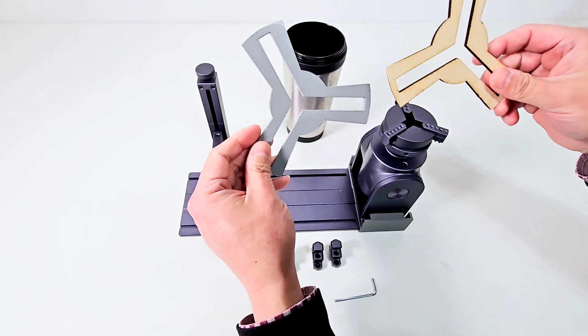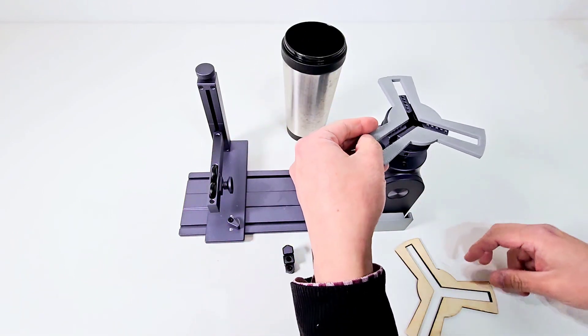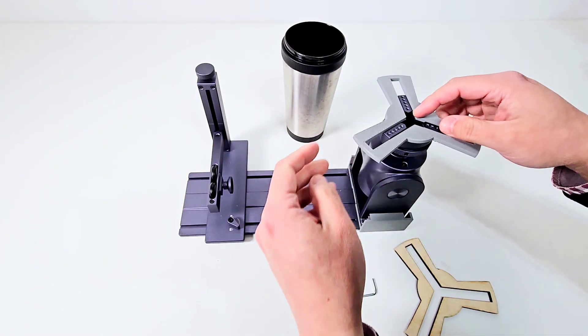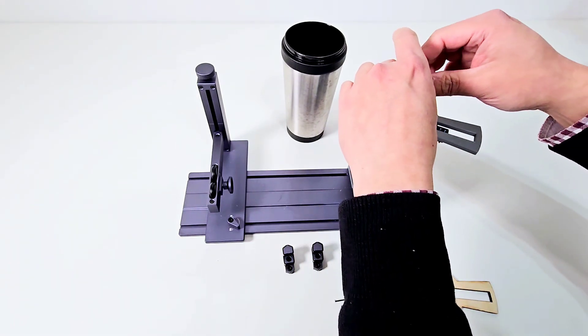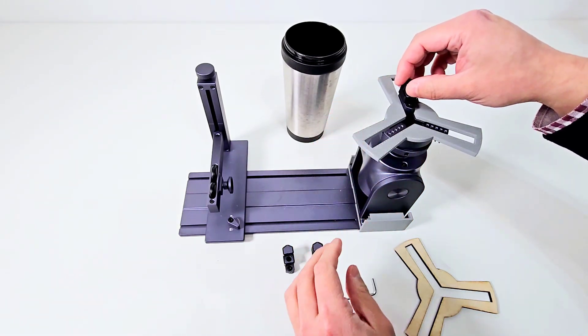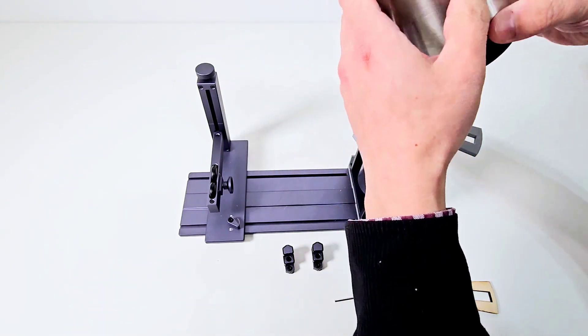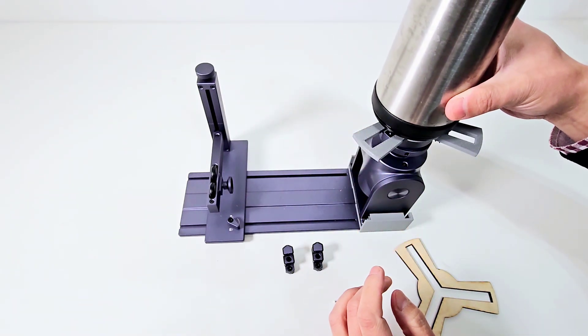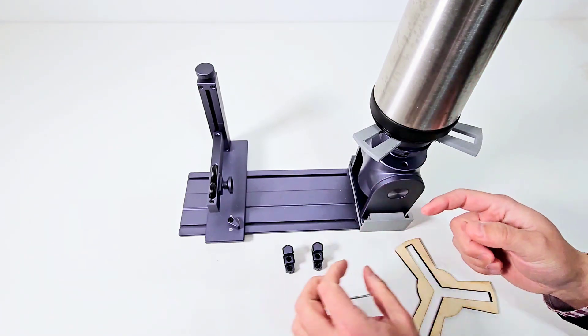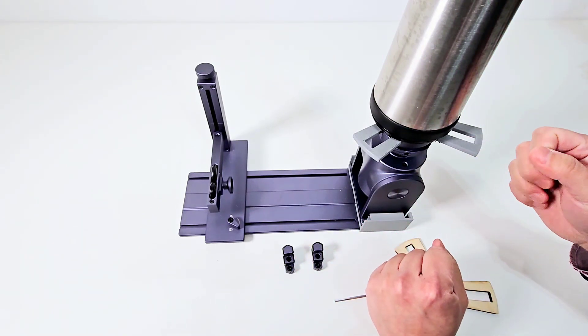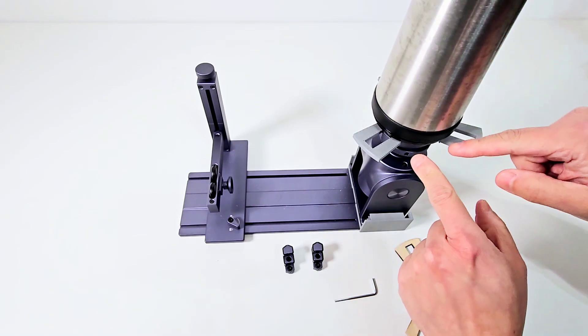These back plates sit on the rotary chuck. You screw in the chuck teeth, and then your flask can be held in the middle. You expand the chuck teeth, and essentially you are always level.